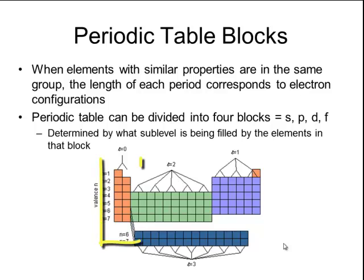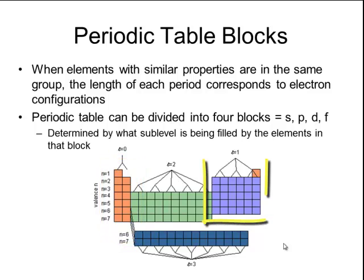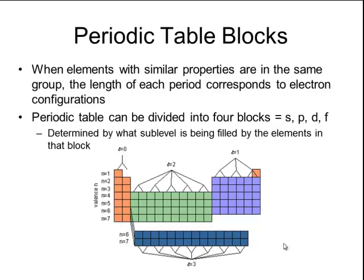All the elements in the first two columns, group 1 and group 2, are in the s block because their electron configurations end with s. All of the elements in the p block, which are on the far right side of the table, their electron configurations end in p1, p2, p3, p4, p5, or p6, which is why that block is 6 elements across.